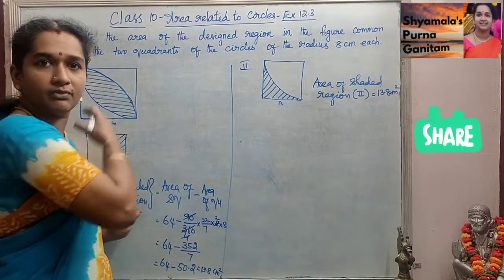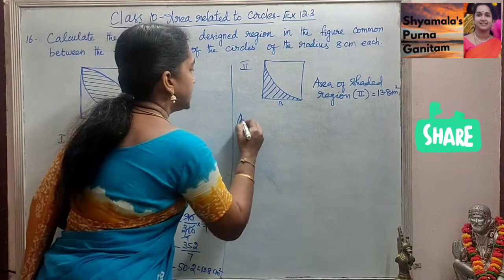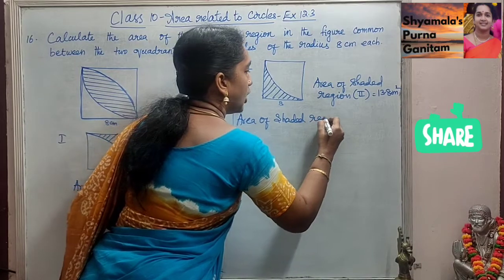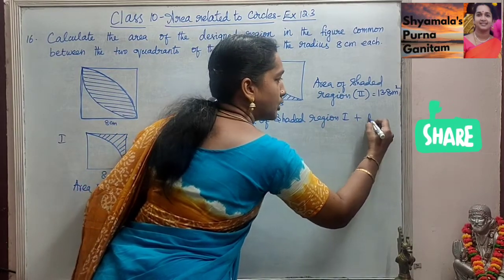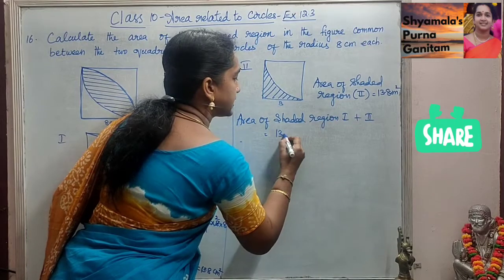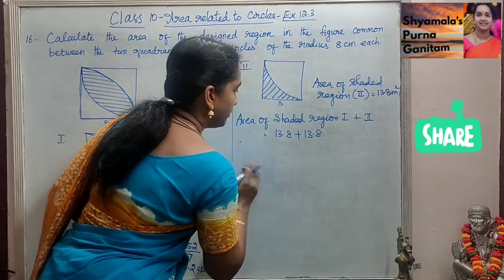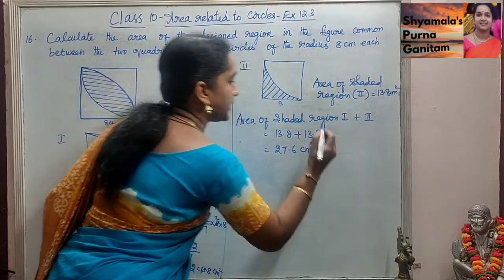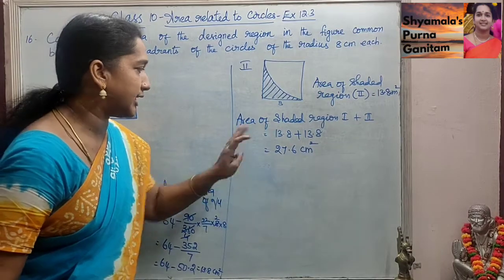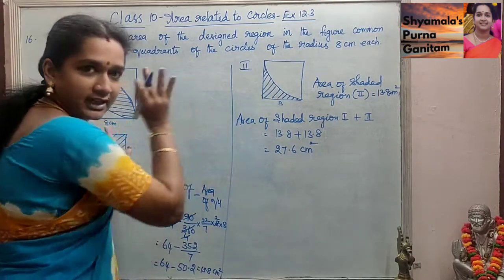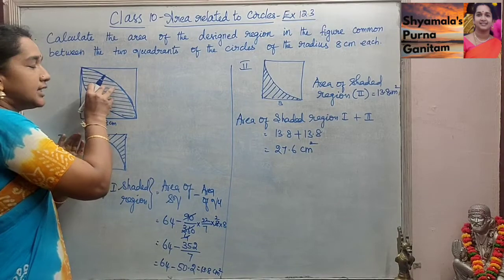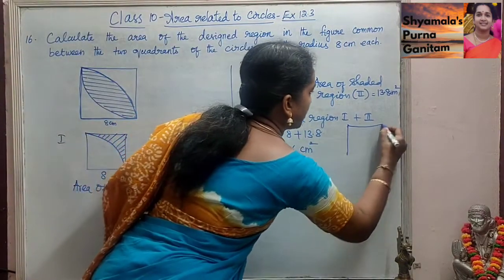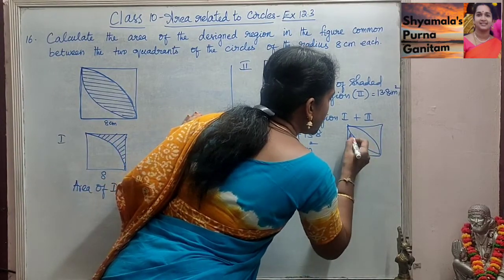Now, as mentioned, we are going to add part 1 and part 2. Area of shaded region 1 + 2 = 13.8 + 13.8 = 27.6 cm².